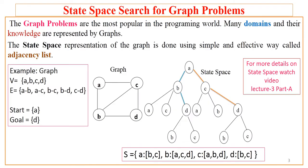Many real-world problems are represented as graphs because graph problems are most popular in the programming world. Many domains and their knowledge are represented by graphs, but graph representations — whether in the form of diagrams or descriptions — are not suitable for algorithms. AI more specifically needs the information of graphs to be represented as a state space.